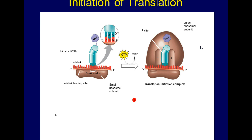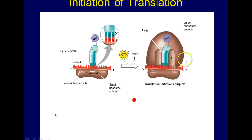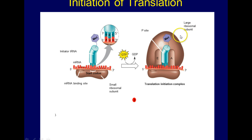Proteins called initiation factors, which aren't shown here, are required to bring all the translation components together, and GTP provides the energy for the assembly. The initiator tRNA is in the P site, and the A site is available to the tRNA bearing the next amino acid. So here's our start codon MET and the AUG-UAC complex — the next sequence triplet amino acid will sit on the A site and then move to the left.